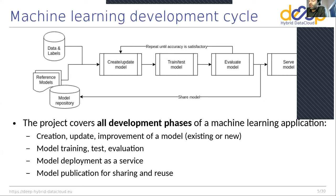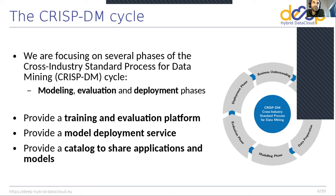Once you have developed an initial model, you perform the training phase, which normally requires access to one or several GPUs or other accelerators. Once trained, you evaluate the model and repeat this cycle — updating the model, training with different hyperparameters or different data, and evaluation. Finally, you serve the model to users or colleagues, and you can publish it back to a model repository. The DEEP Hybrid Data Cloud project covers all development phases: creation, training, testing, evaluation, model deployment as a service, and publication for sharing and reuse.